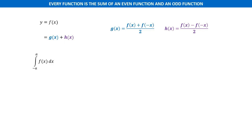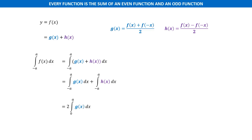We can replace f(x) by the sum of g(x) and h(x), and further write it as the sum of the integrals of g(x) and h(x) with the same limits. Since g(x) is an even function, its integral equals 2 times the integral of g(x) from 0 to a. The integral of h(x) is 0 because it is an odd function. So the integral of f(x) from −a to a equals 2 times the integral of g(x) from 0 to a.